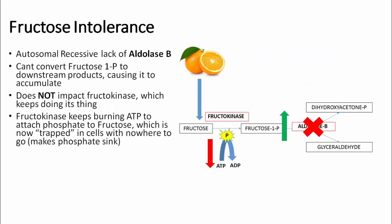The second disorder associated with this pathway is fructose intolerance. Like essential fructosuria, fructose intolerance is an autosomal recessive condition, but in this case it involves a lack of the enzyme aldolase B, which serves to convert fructose-1-phosphate into its downstream products, dihydroxyacetone phosphate and glyceraldehyde, causing fructose-1-phosphate to accumulate. This accumulation does not impact the activity of fructokinase, which continues to phosphorylate fructose into fructose-1-phosphate, wasting valuable ATP in the process.